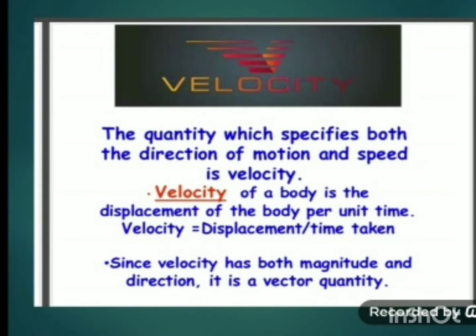In the previous video we saw what speed is: the distance traveled by an object in unit time is called speed. The rate of motion can be specified by speed. But the rate of motion can be more comprehensive if we specify the direction of motion along with speed. The quantity that specifies both the direction and the magnitude of speed is known as velocity.